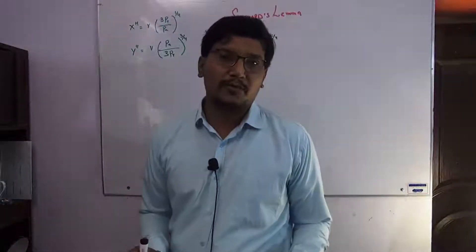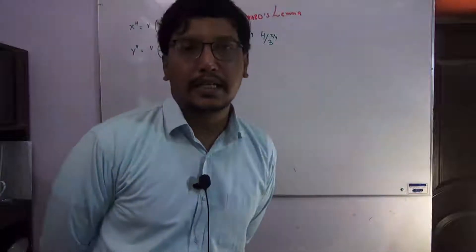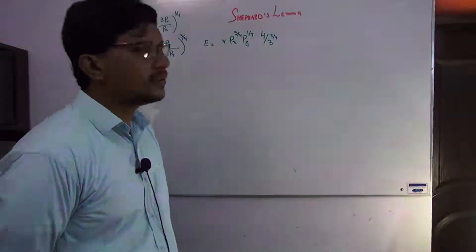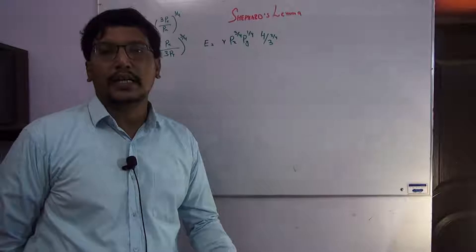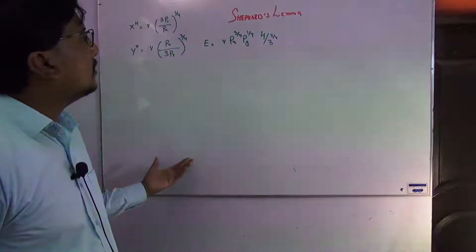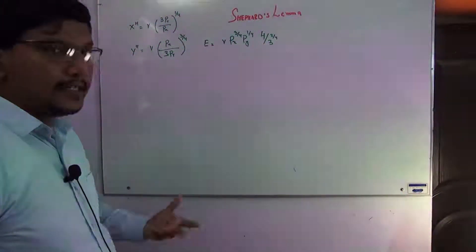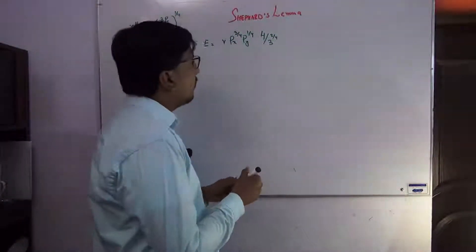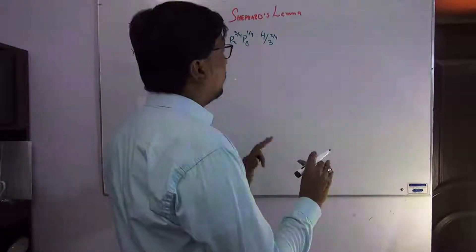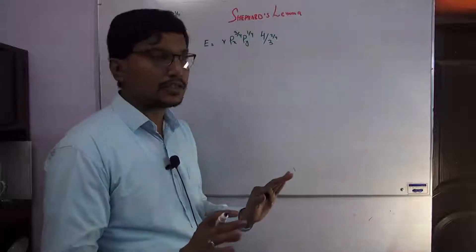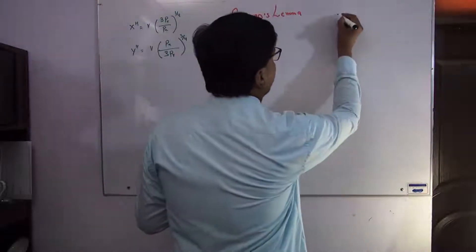We are going to discuss the Shephard's Lemma. In the last lecture on the properties of the expenditure function, we discussed five properties, and the fifth property was Shephard's Lemma. Shephard's Lemma is very simple: if we have an expenditure function, its general form involves prices and utility.